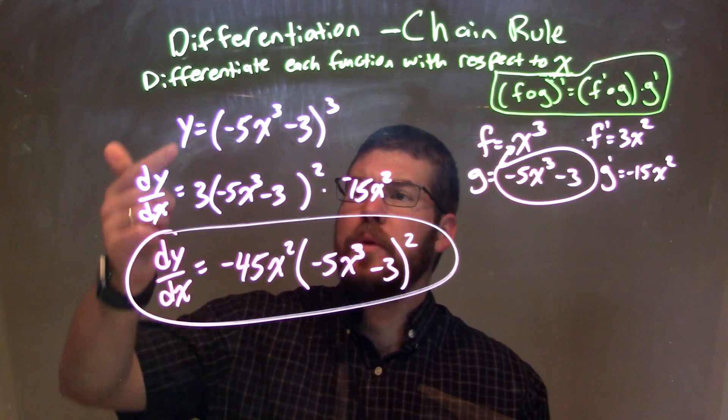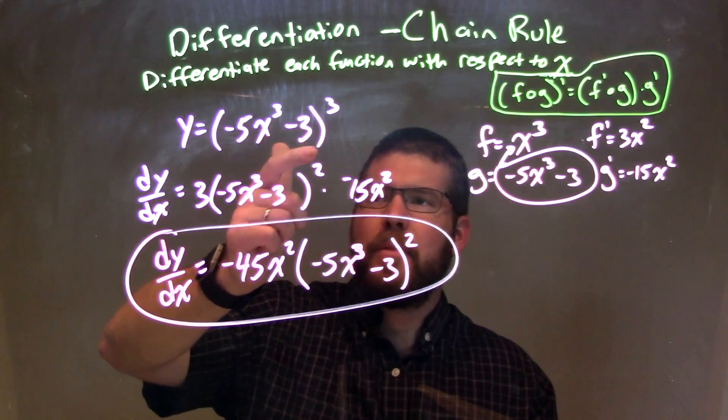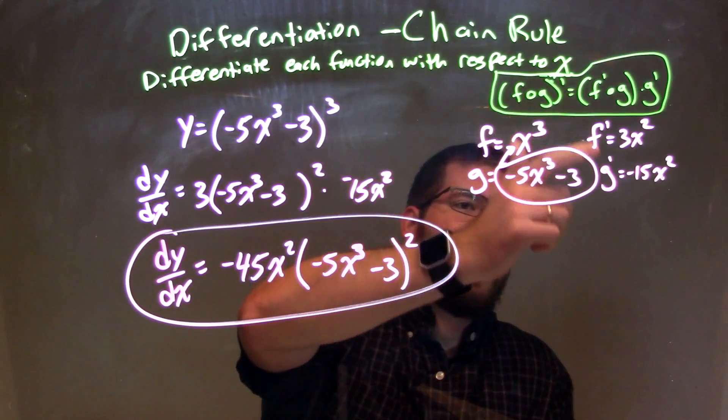And there we have it. So let's recap. We're given y equals (negative 5x to the third minus 3) to the third power. I wrote that to be my f of g, and then I found f prime and g prime.